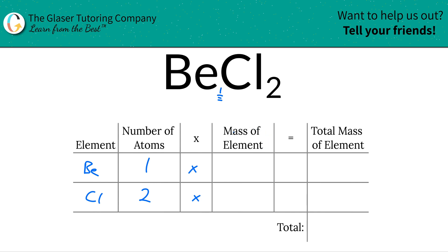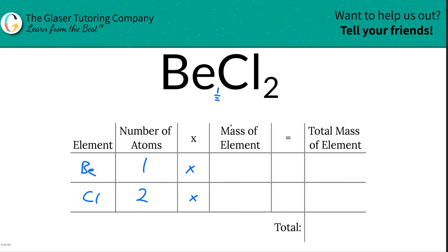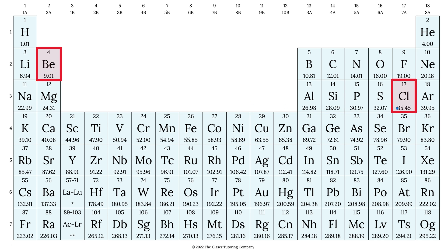Then we're going to multiply it by the mass of each element, and that's where we use our periodic table. So let's check it out. So beryllium here is about 9.01, and chlorine here is about 35.45.